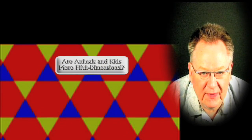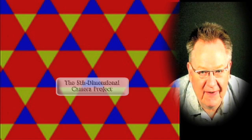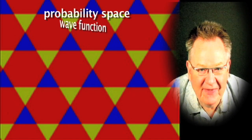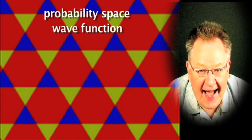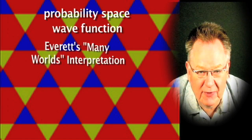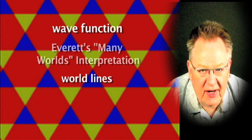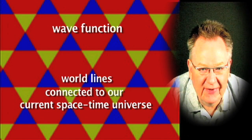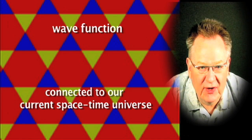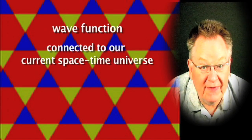In our 'Animals and Kids More 5th Dimensional' entry, we discuss something connected to the 5th Dimensional Camera Project, a more recent entry looking at one of the central ideas to my project, which has now received some support from scientists at Oxford University. The 5th Dimension can be thought of as our probability space — the wave function of potential pasts and futures that connect to our now is a pattern in the 5th Dimension, which we are potentially connected to through chance and choice: Everett's many worlds. Being able to see 5th Dimensionally would be to see all the possible world-lines causally connected to a particular instant of our space-time universe. Someone who is more connected to the past and future through intuition, inspiration, creativity, déjà vu, or clairvoyance could be said to have a more 5th Dimensional awareness.